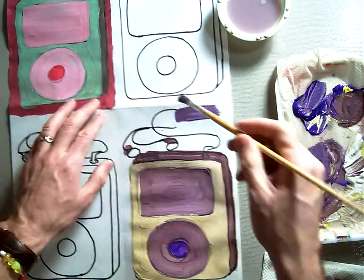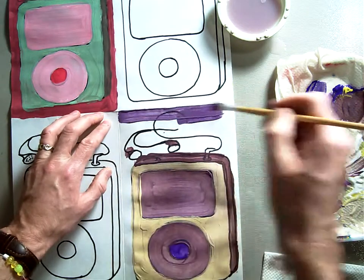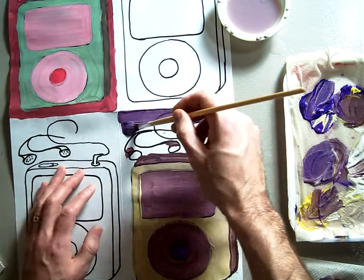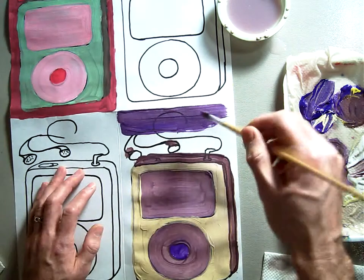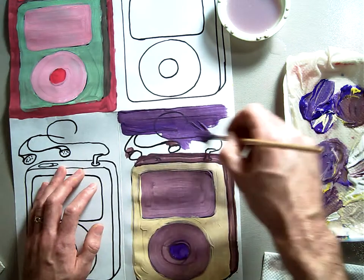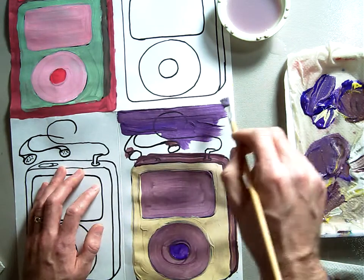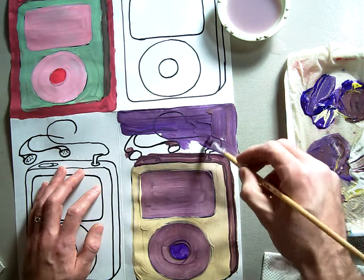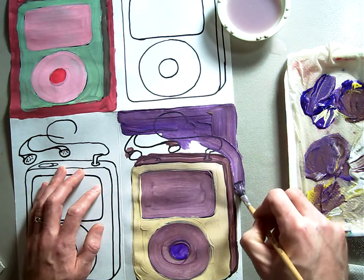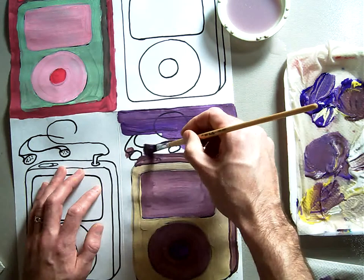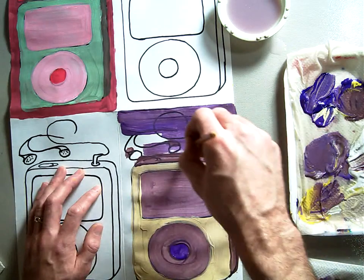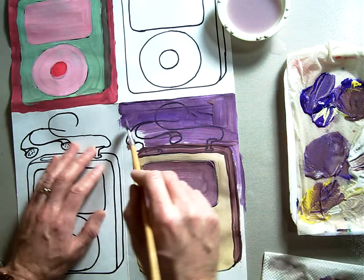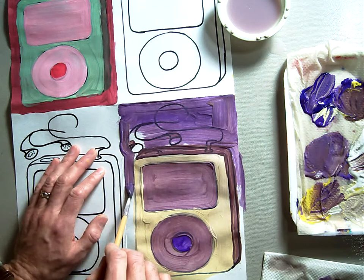There's my purple-y background. See how I'm painting right over my Sharpie lines? This is a good thing about Sharpie is later on I can still see that and I can go back and draw over the top of it.